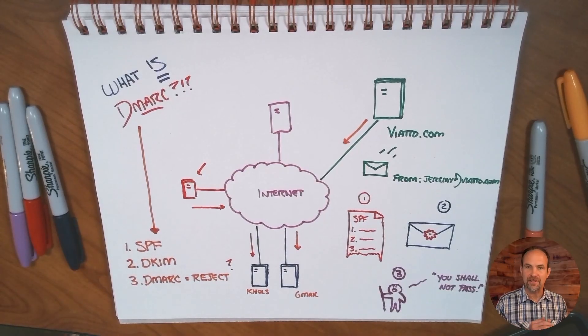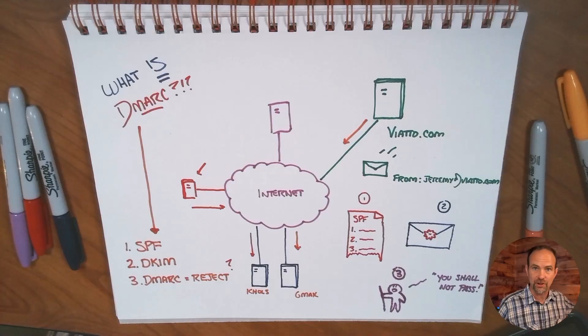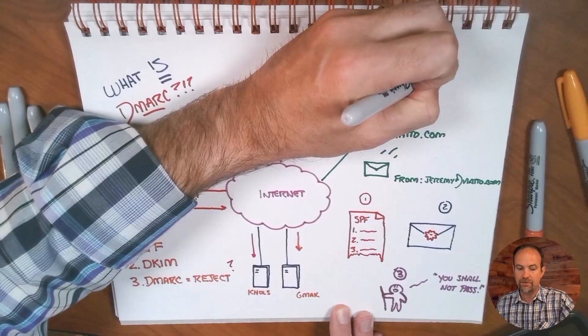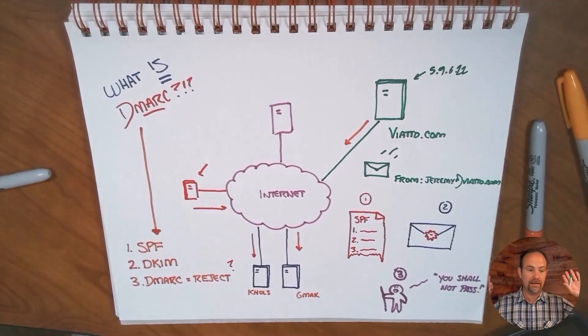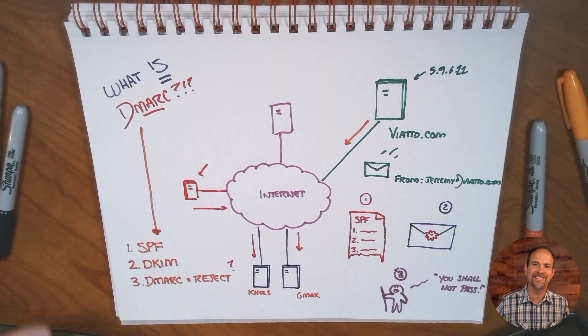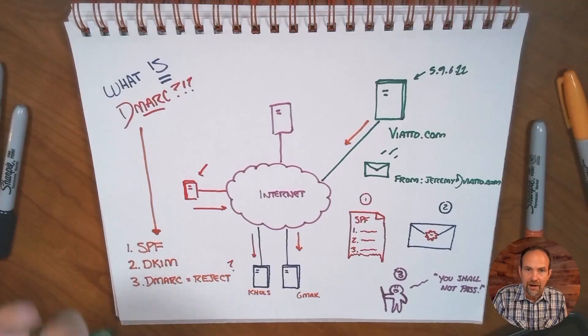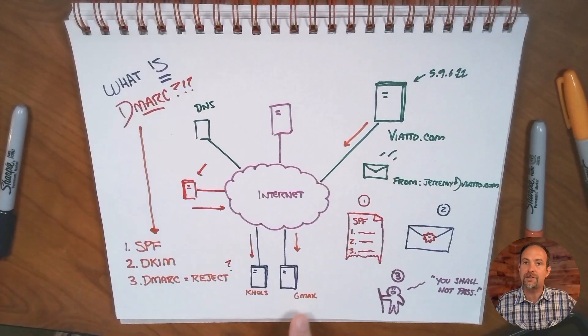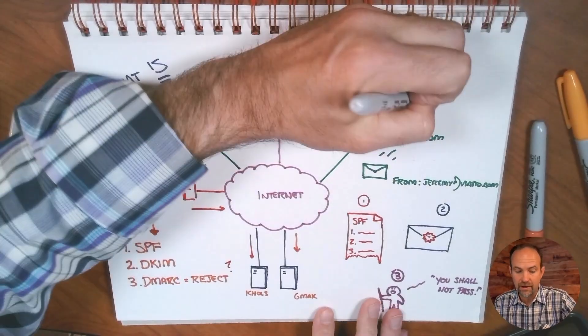SPF stands for the Sender Policy Framework. It's been around for a long time and many of you might even recognize it. SPF says, I'm going to create a list of the email servers that are allowed to transmit on my behalf. For example, if I've got viato.com as my domain, this server is going to have an IP address — let's just say 5.9.6.22. I can go create an SPF record in the DNS settings for viato and list that IP address, or I could even list it by name.